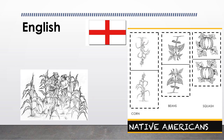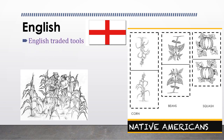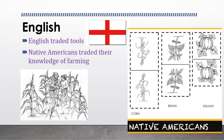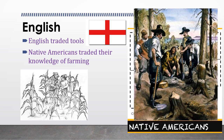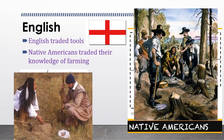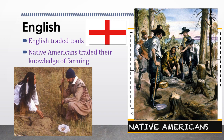Positive interactions between the English and the Native Americans included trading for metal tools that were new to the Native American people. In exchange, the Native Americans traded their knowledge of farming with the English people, who were in many ways unprepared for the conditions here in North America. The Native Americans showed the English how to grow corn, beans, squash, and pumpkins for food to stay alive.